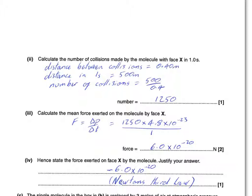Calculate the mean force exerted on the molecule by face X. Force is rate of change of momentum. We have 1250 times 4.8 times 10 to the minus 23, the total momentum change in one second (number of collisions times momentum change per collision), divided by the time interval of one second. This gives 6 times 10 to the minus 20.